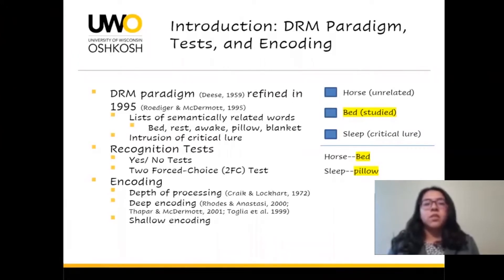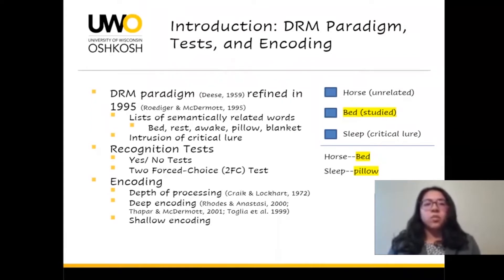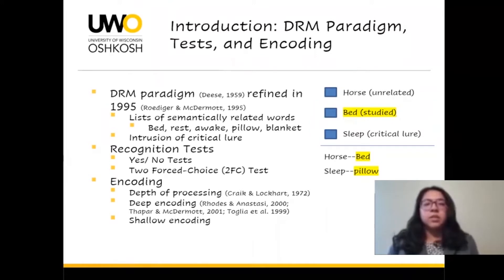It was discovered in the original study that these critical lures intruded into the participants' memories, and they would falsely recall them as being studied when their memory was tested. Along with the critical lure, unrelated words and studied words are used when testing the participants' memories.